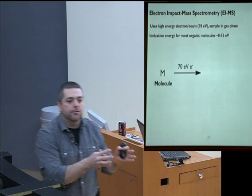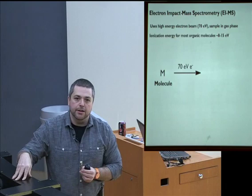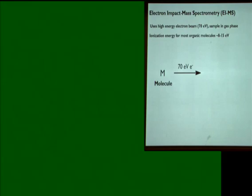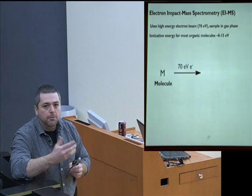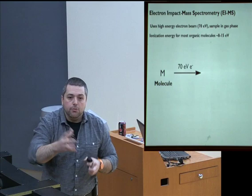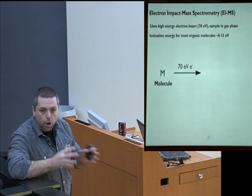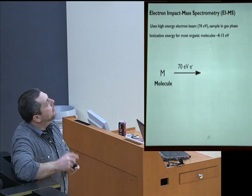I keep saying spectrometry rather than spectroscopy because there is a difference. The definition of spectroscopy, as established in lecture one, is the interaction of electromagnetic radiation with matter. We use electromagnetic radiation of a specific energy to get specific information about a compound. Mass spectrometry, by contrast, doesn't use electromagnetic radiation, so it's not accurate to call it spectroscopy. These are two separate pieces of terminology that we shouldn't interchange.